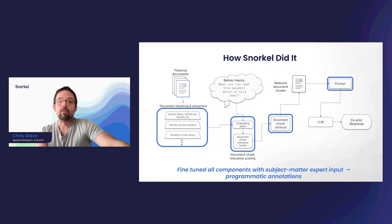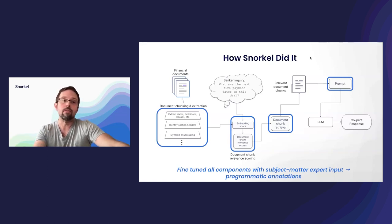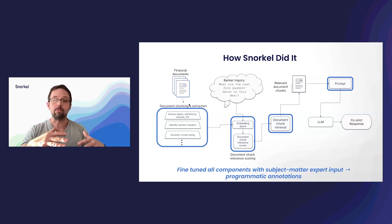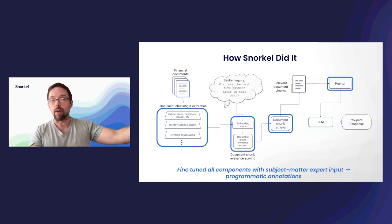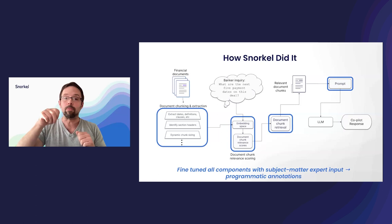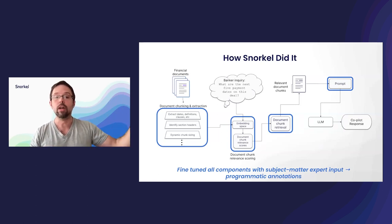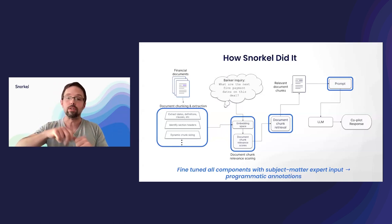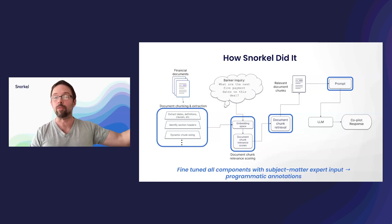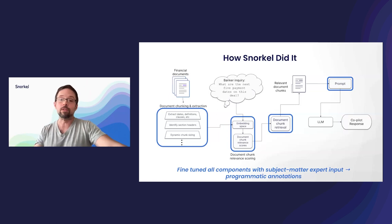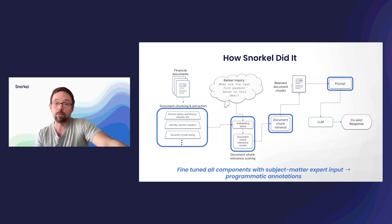Here is the architectural diagram of the RAG system we were working with. Financial documents come in and get chunked — the challenge is finding where in a financial document the answer lives. You divide them up, extract key pieces of information that might be relevant to a question, put them into a vector space to score and rank each chunk against the question as a proxy for relevance, retrieve the highest-ranked chunks, put them into the prompt, and then the LLM reads from the prompt to answer the question. We fine-tuned all of these components using subject matter expert input combined with programmatic annotations.